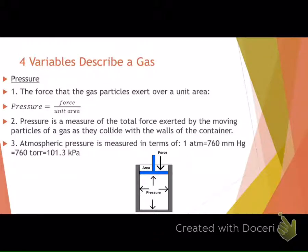The next variable is pressure. We saw pressure in our vapor pressure curves — where a liquid changes to a gas — and in phase diagrams where pressure and temperature impact the state of matter. When we measure pressure, we're measuring a force caused by gas particles exerting it over an area. This is something you'd calculate more formally in a physics course.